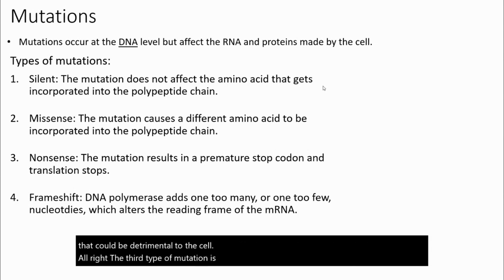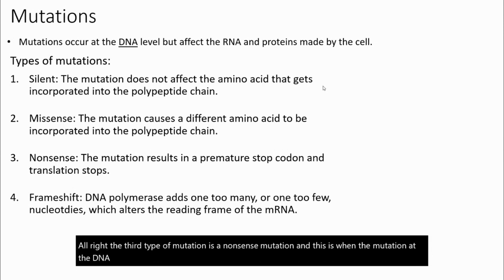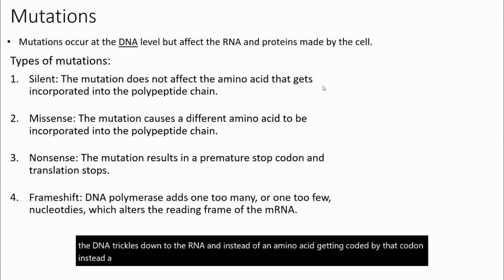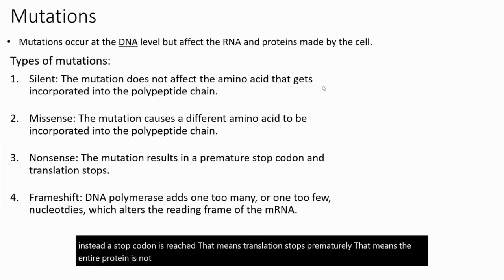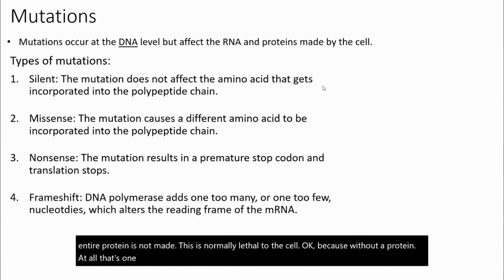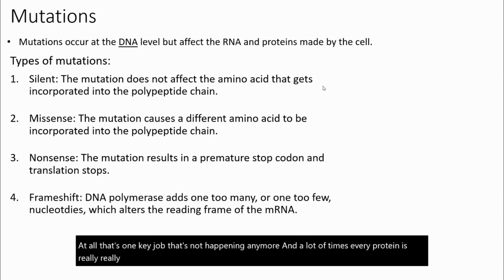The third type is a nonsense mutation. This is when the mutation at the DNA trickles down to the RNA, and instead of an amino acid being coded for by that codon, a stop codon is reached instead. That means translation stops prematurely — the entire protein is not made. This is normally lethal to the cell, because without a protein, a key job isn't happening, and many proteins are critical for cell survival.